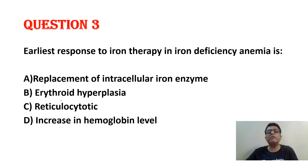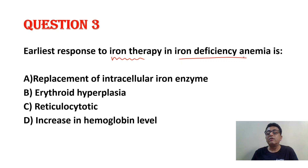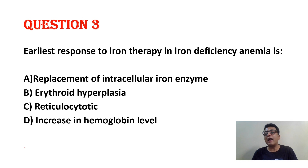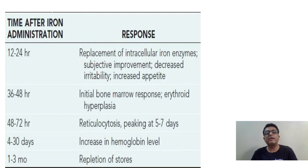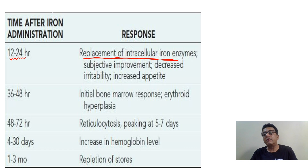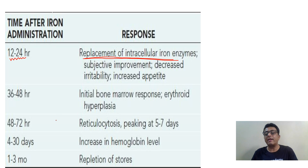Question number three: earliest response to iron therapy in iron deficiency anemia. When we start iron, what is the earliest response that occurs in the body? Most of the time you think it's reticulocytosis — it's not. Looking at this table from Nelson, concentrate: from 12 to 24 hours, the earliest change is replacement of intracellular enzymes — iron-containing enzymes such as catalase, peroxidase, and MAO.